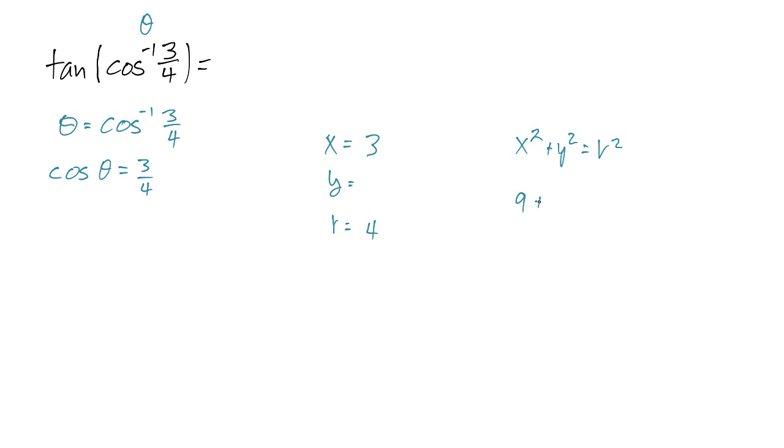X is 3, so we get 9 plus y squared is equal to 16. Subtract 9 from both sides, we get y squared is equal to 16 minus 9 is 7. So y is equal to plus or minus the square root of 7.